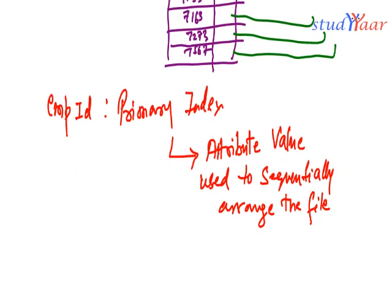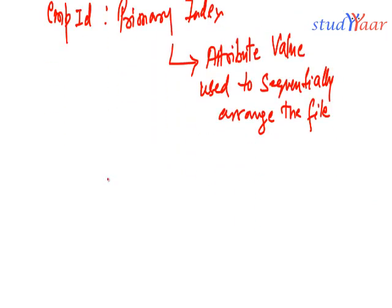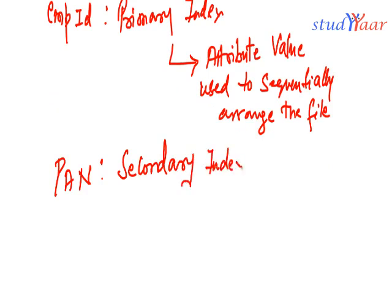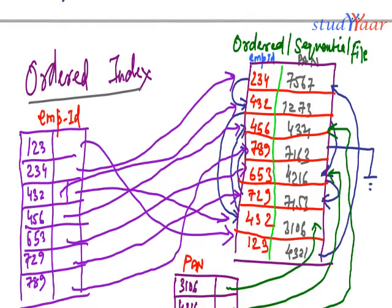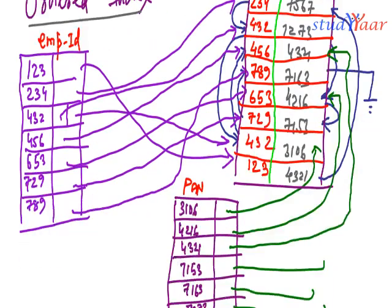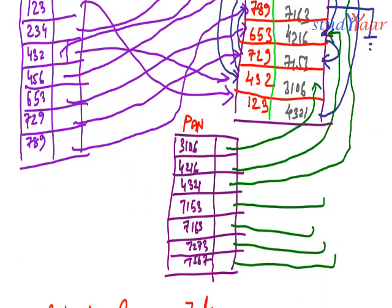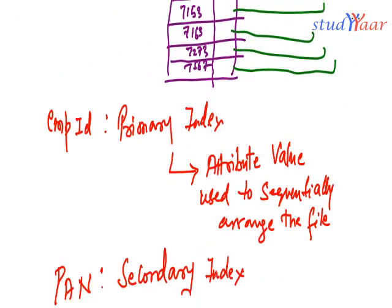So, this is my primary index. And my PAN number is a secondary index. Now, an index which is not a primary index obviously is going to be a secondary index. The attribute for a secondary index is not used to sequentially arrange the records in the file. So, we have seen what is a primary index. One more thing, primary index is also called as a clustering index.